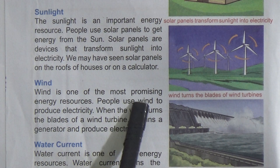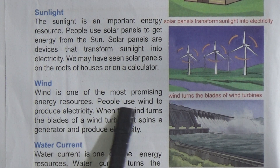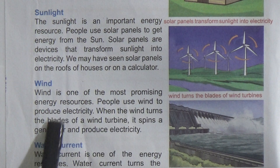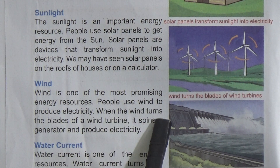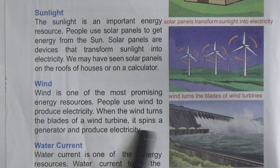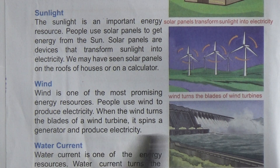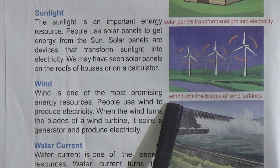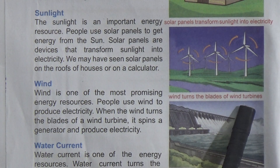Wind is one of the most promising energy resources. People use wind to produce electricity. When the wind turns the blades of a wind turbine, it spins a generator and produces electricity. Look at here — this picture shows wind turning the blades of a wind turbine.